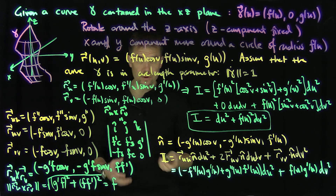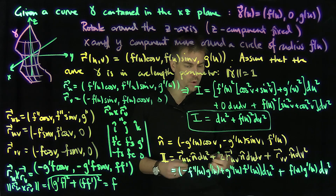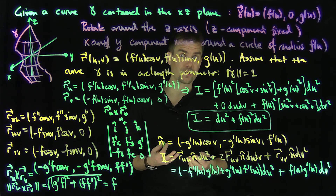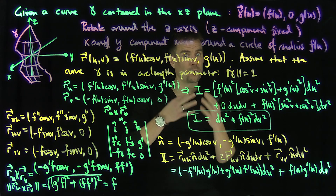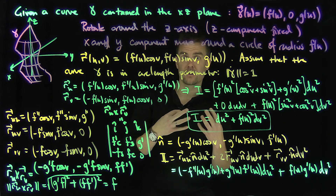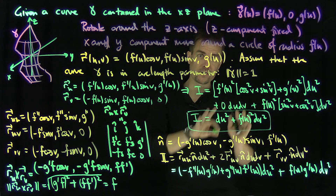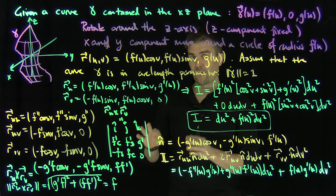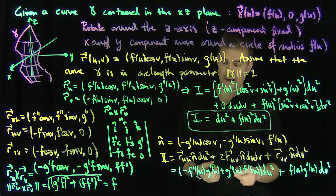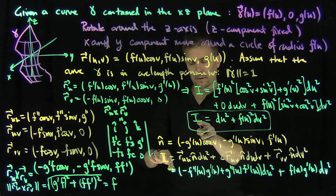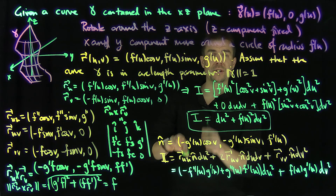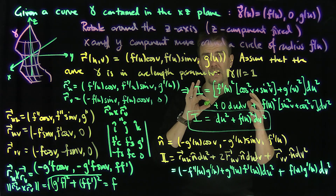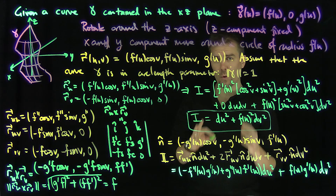That's our second fundamental form of the surface of revolution. Now that we have these two fundamental forms, we can consider special cases: cones, cylinders, spheres, and hyperboloids of one sheet are all surfaces of revolution. These formulas give us quick access to computing first and second fundamental forms of common surfaces. In further videos, we'll use these forms in matrix form to compute mean curvature, Gaussian curvature, and sectional curvatures very quickly.